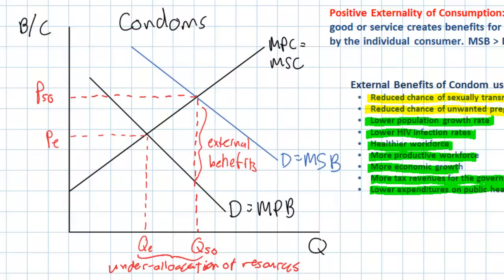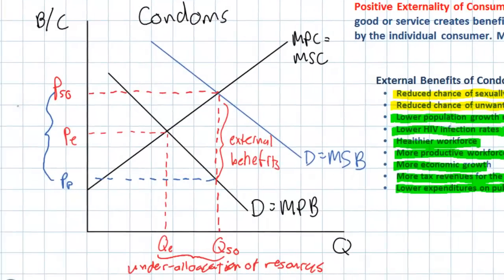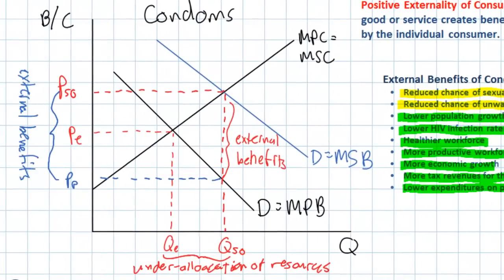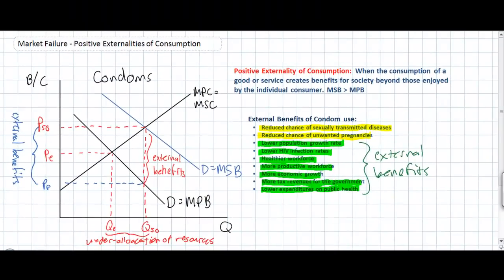The problem is that when individuals are left to their own accord to decide how many condoms to use, it makes no sense for them to consume at a quantity of QSO. At this quantity, the private benefit represented by the dotted line from the MPB curve is lower than the private cost. Therefore, private individuals would not have an incentive to consume QSO condoms. The distance between PSO and PP represents the external benefits of condom usage. This raises the question: is there any way a government or non-government organization can intervene to encourage greater condom use and realize these external benefits?